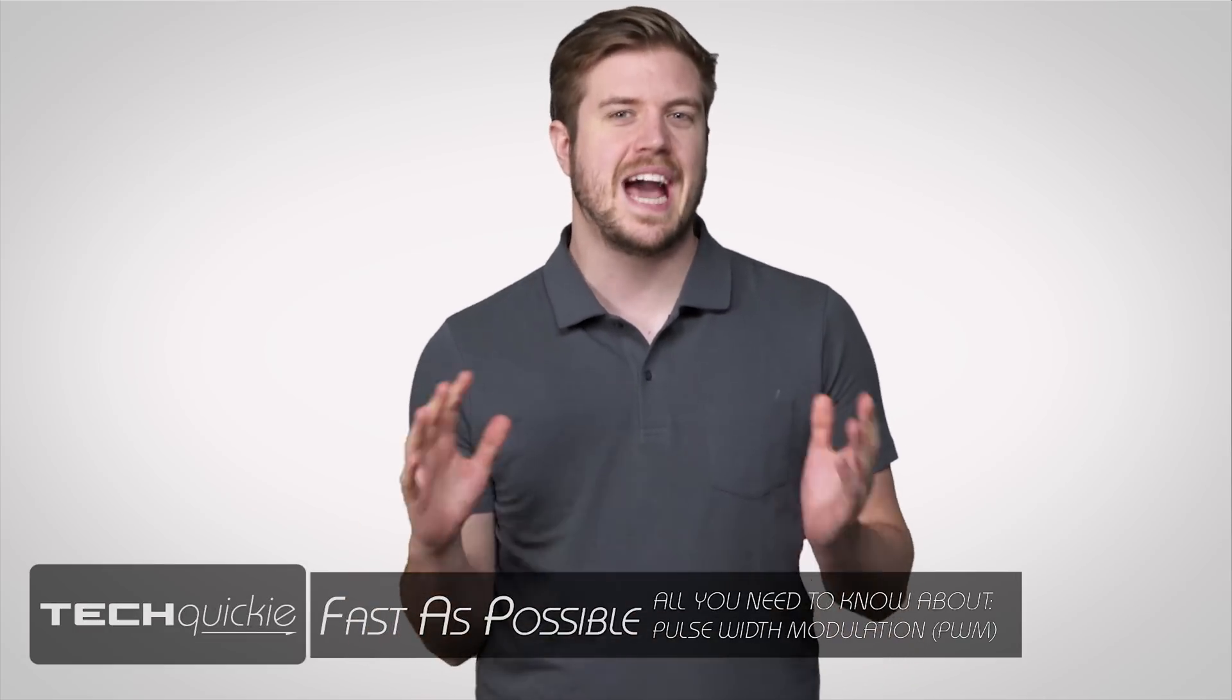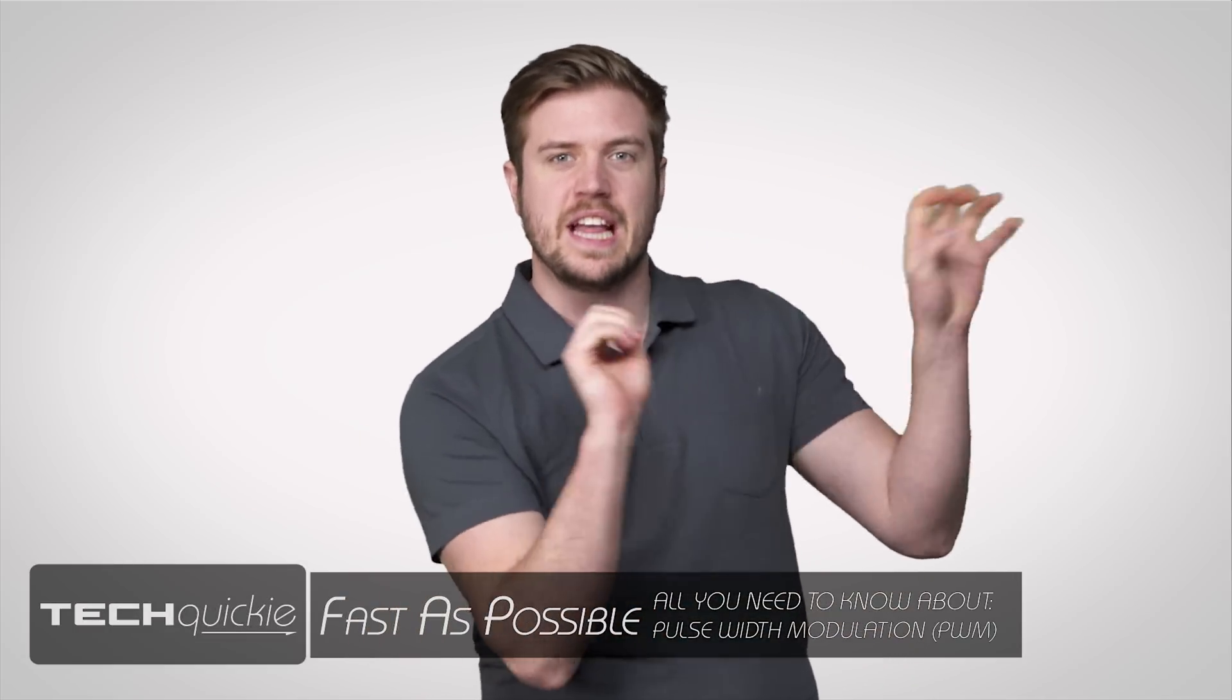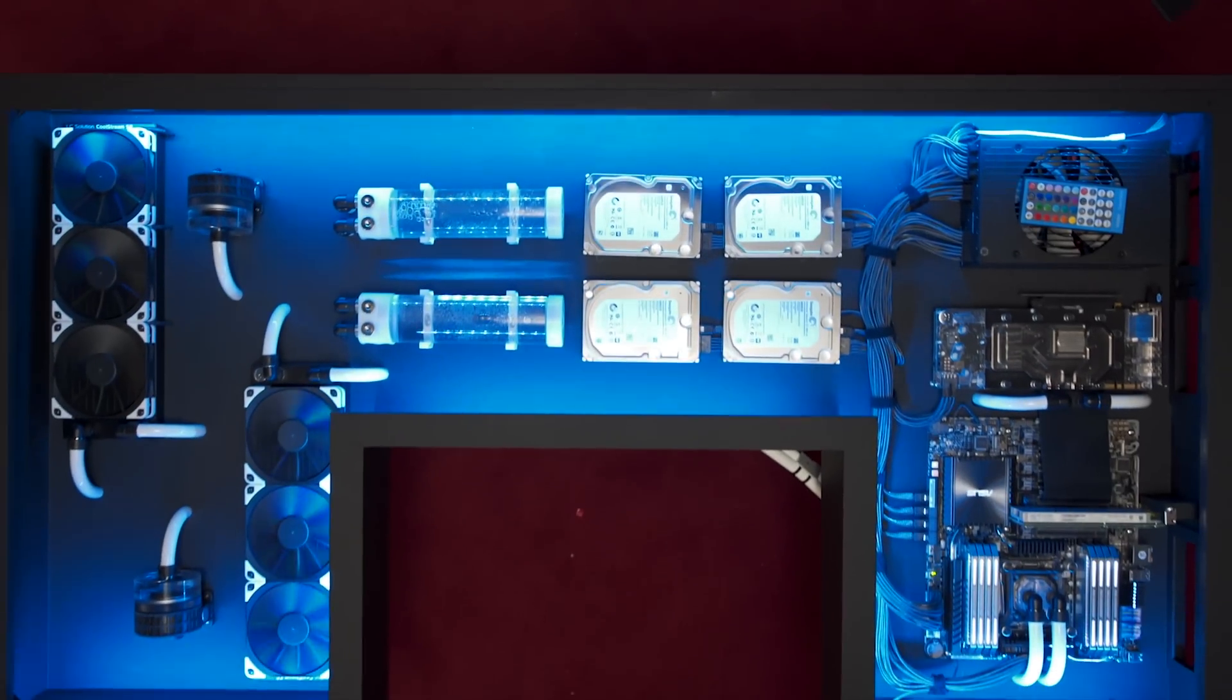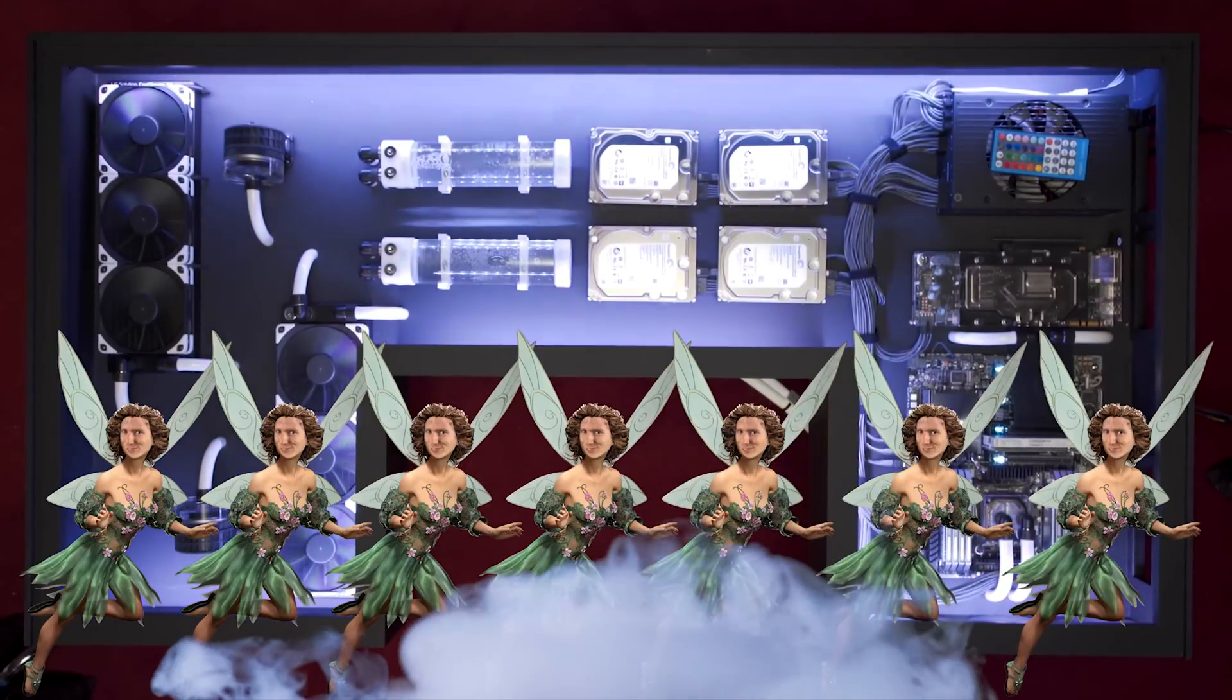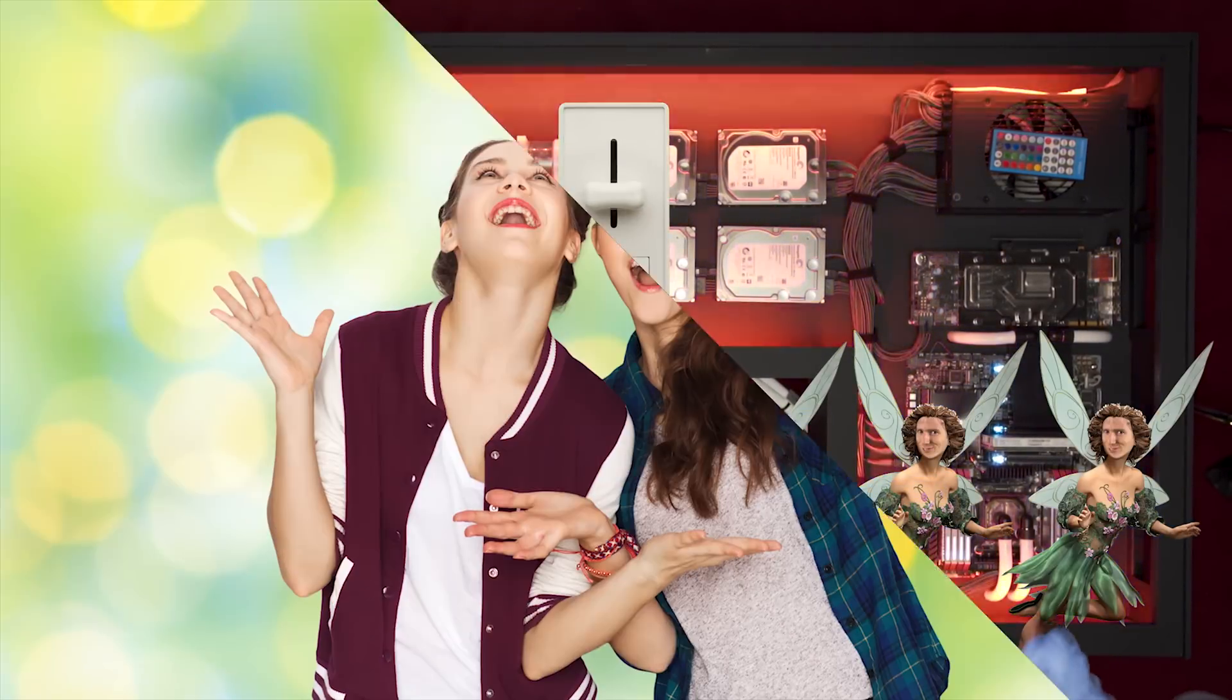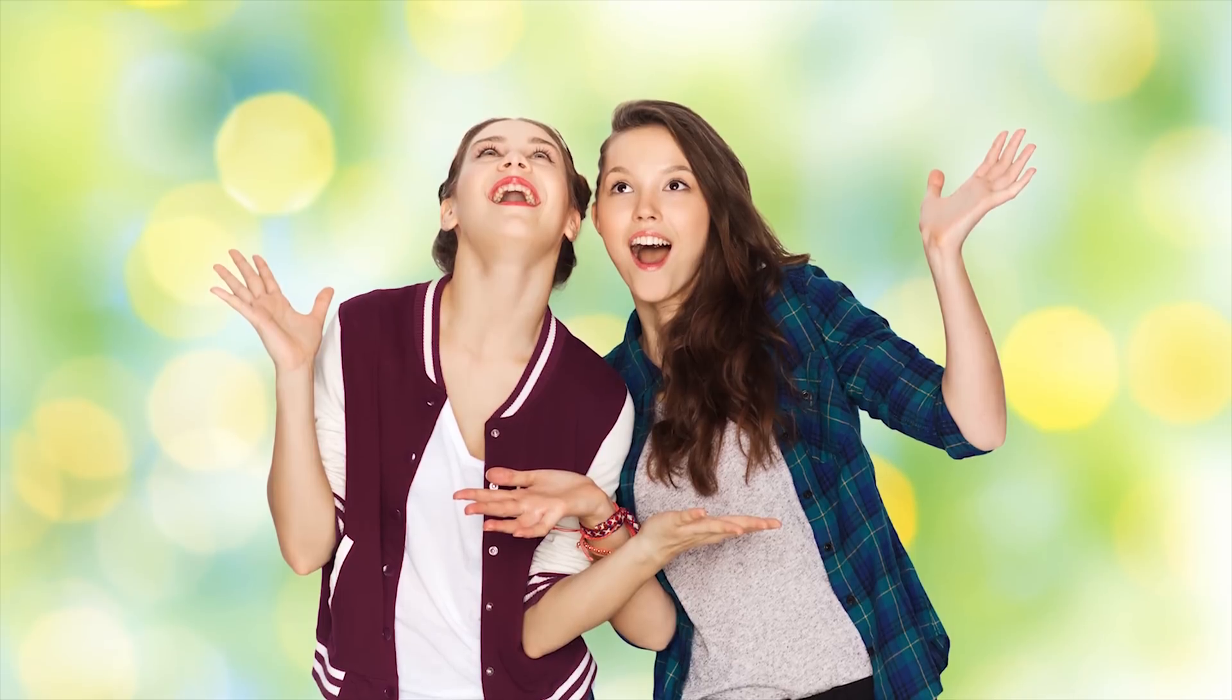How does your computer put on such a fantastic light show with all those LEDs? How do the lights fade and change colors? Is there a legion of Pixies with an amazing array of dimmer switches coordinated precisely so that your friends are impressed with your RGB lighting?